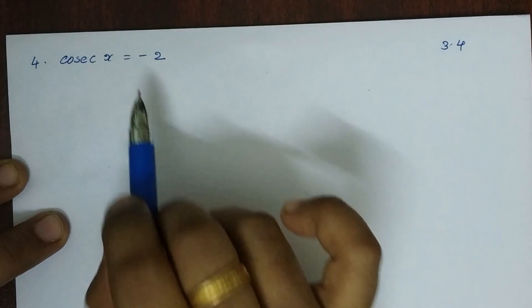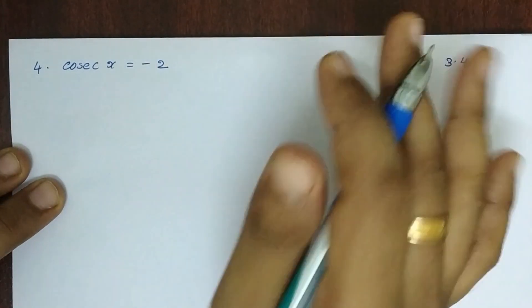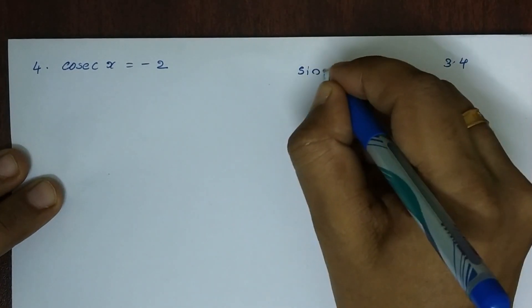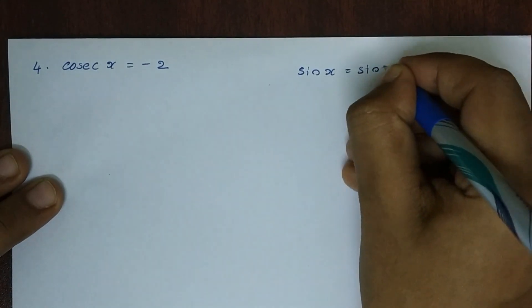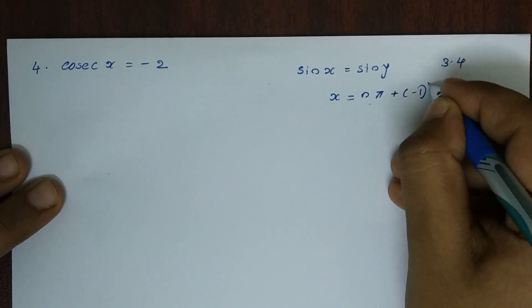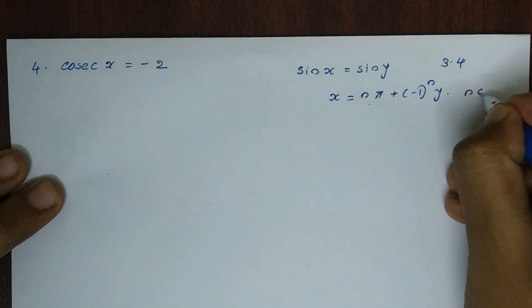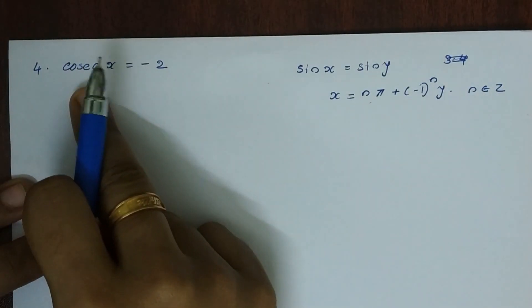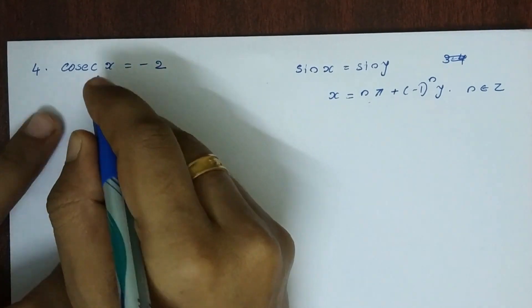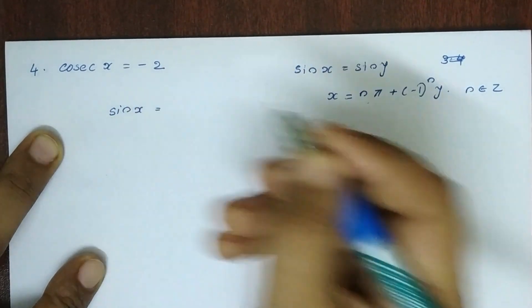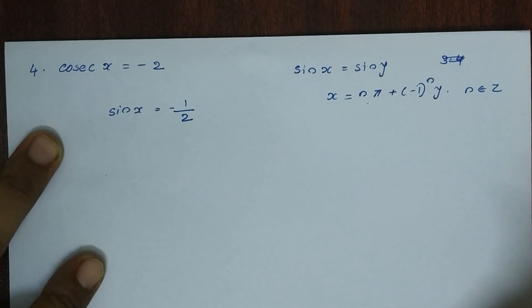So cosec x is equal to minus 2. The general solution formula is x is equal to n pi plus minus 1 to the power n into y, where n belongs to Z. We convert cosec x to sin x: sin x is equal to minus 1 by 2.